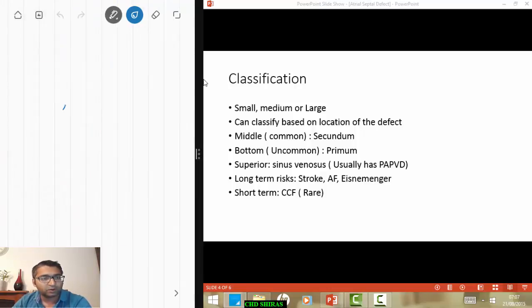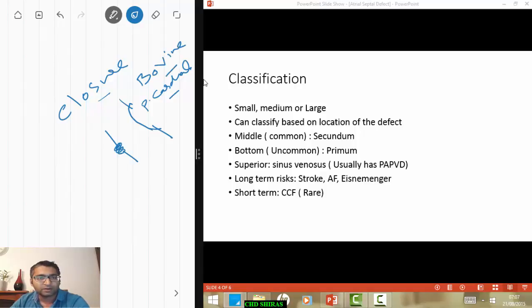And then obviously the closure. If you have a very small hole, the surgeon might be able to do the primary repair just with sutures. If you have a big hole, you need to put a patch. So the patch is usually the pericardial patch. It can be autologous from the same person if it's a small hole. It's usually a bovine patch if it is a large hole. So once this is treated, it's pretty good.